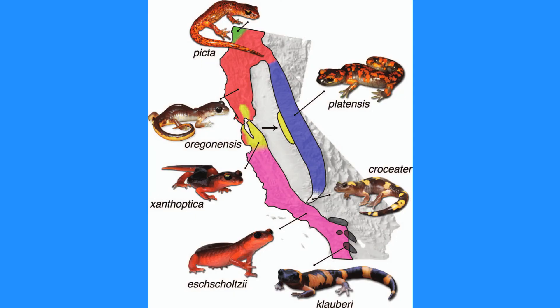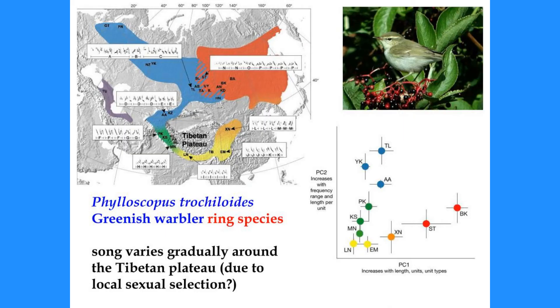This means that the herring gulls and lesser black-backed gulls, as I know them, are members of the same breeding population, yet here they don't breed with each other. So are they the same species, or two separate species? There are many examples of ring species across the world, such as the Ensatina salamanders and the greenish warblers.